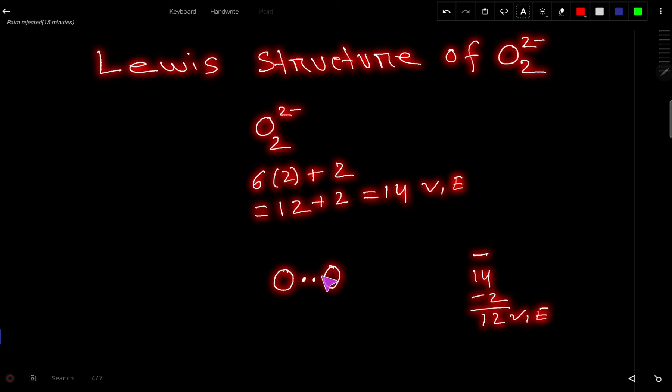This oxygen has 2, so it will take a maximum of 6 valence electrons to satisfy its octet. So now we have 6 valence electrons left. This oxygen will also take 6 more valence electrons to satisfy its octet.